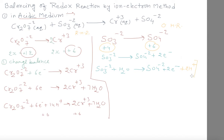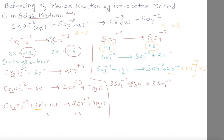Now we have to combine both reactions. There are 2 electrons in the oxidation half reaction and 6 electrons in the reduction half reaction. We will multiply the oxidation reaction by 3 to balance the electron count. So multiplying: 3SO₃²⁻ + 3H₂O gives 3SO₄²⁻ + 6e⁻ + 6H⁺. Now this reaction will be added to the reduction half reaction.